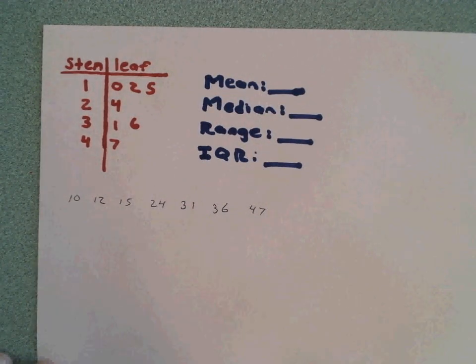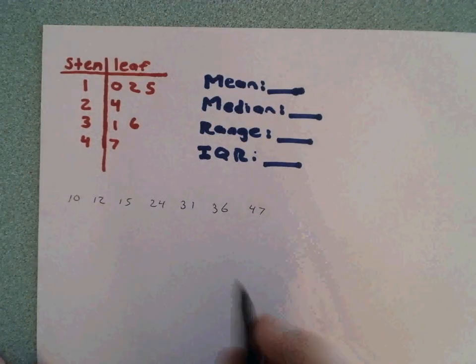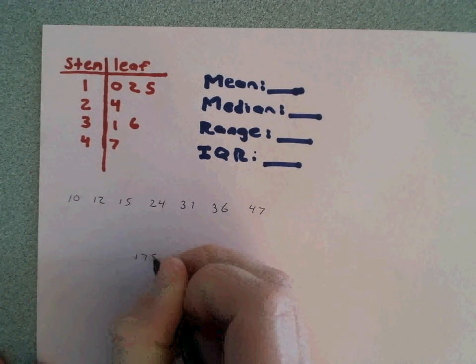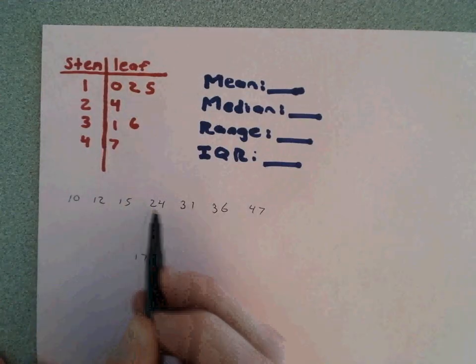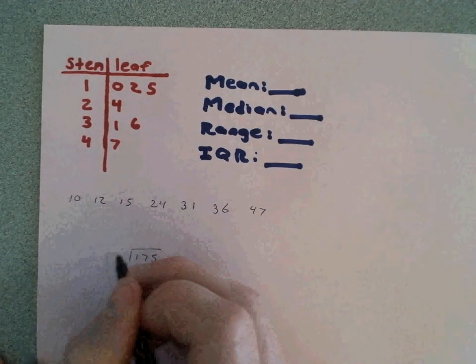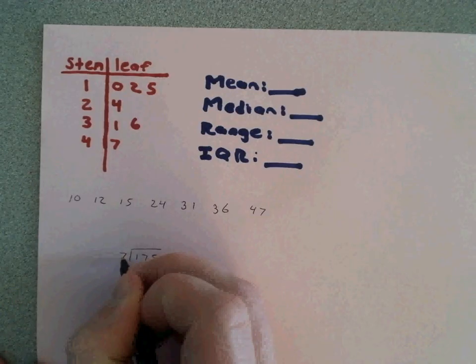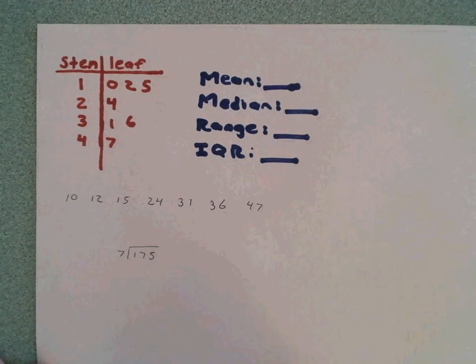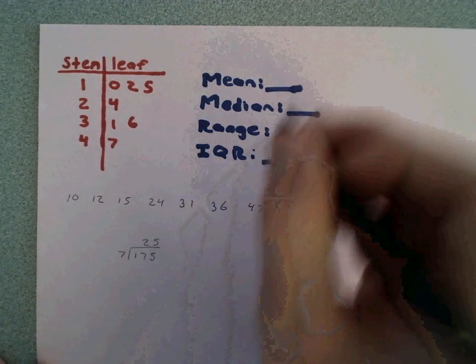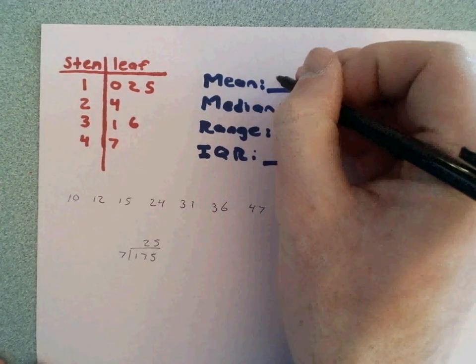To find the mean, we're going to add all of these numbers together. When we add all those numbers together, we get 175. We added seven numbers together, so we're going to take 175 and divide it by seven. When we take 175 and divide it by seven, we get 25, which means our mean, or our average, is 25.